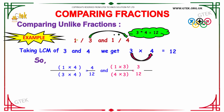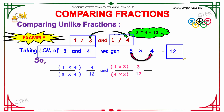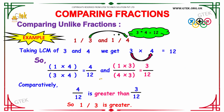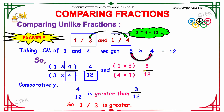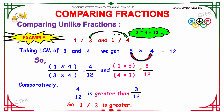Moving to the next example: we have 1/3 as the first term and 1/4 as the second term. As we know, we need to take the LCM first. Taking the LCM of 3 and 4 gives us 12. To make the term 1/3 have denominator 12, we multiply 4 in both the numerator and denominator. Similarly, for the second term 1/4, we multiply 3 in both the numerator and denominator to get 12. This gives us 4/12 and 3/12.